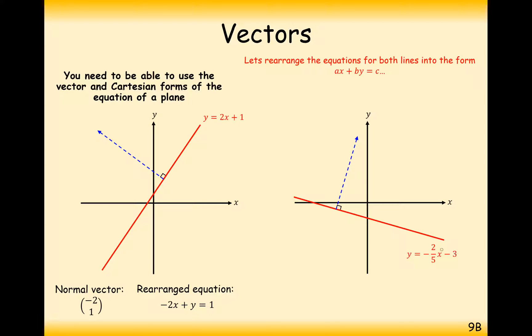And it can happen for much more complicated things as well. So y equals minus 2 fifths x minus 3. If we were to work out the perpendicular here, or the normal, normal just means a line that meets the equation at a right angle. If we were to rearrange this, then we would get 2x plus 5y equals minus 15, and you can see here that this normal vector is 2, 5. So actually, the normal vector is a really handy way of describing the equation of a line.